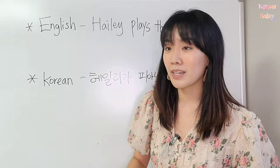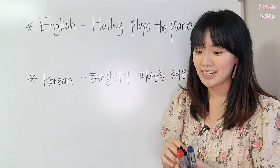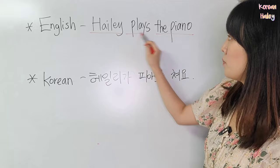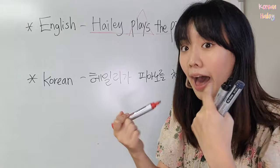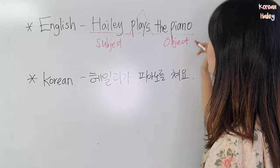English sentence: 'Ailey plays the piano.' Let's look at this. 'Play' is the verb, and 'Ailey' is the subject — I play the piano, so this is the subject. And then 'the piano' — it's the object, so this is the object.